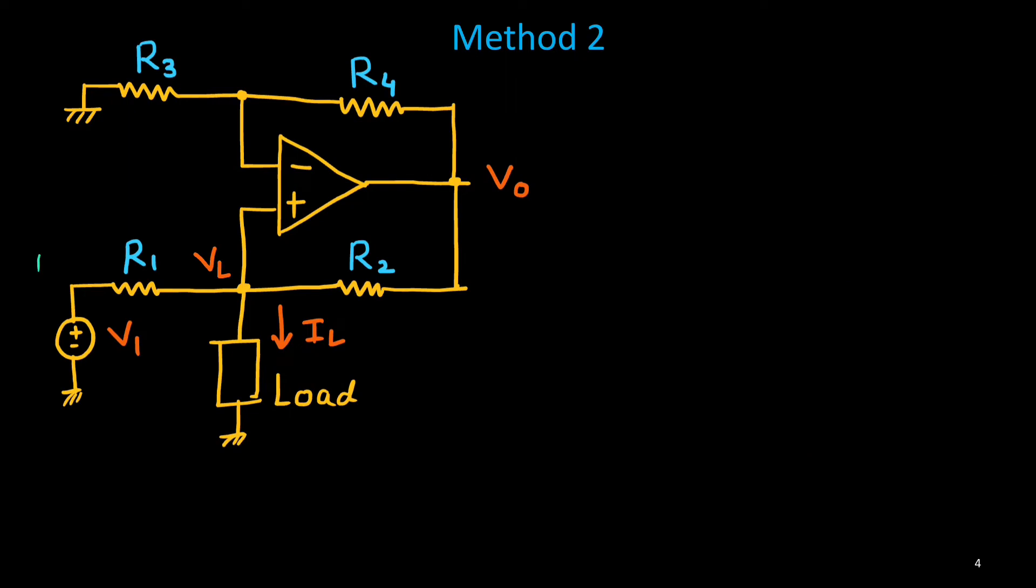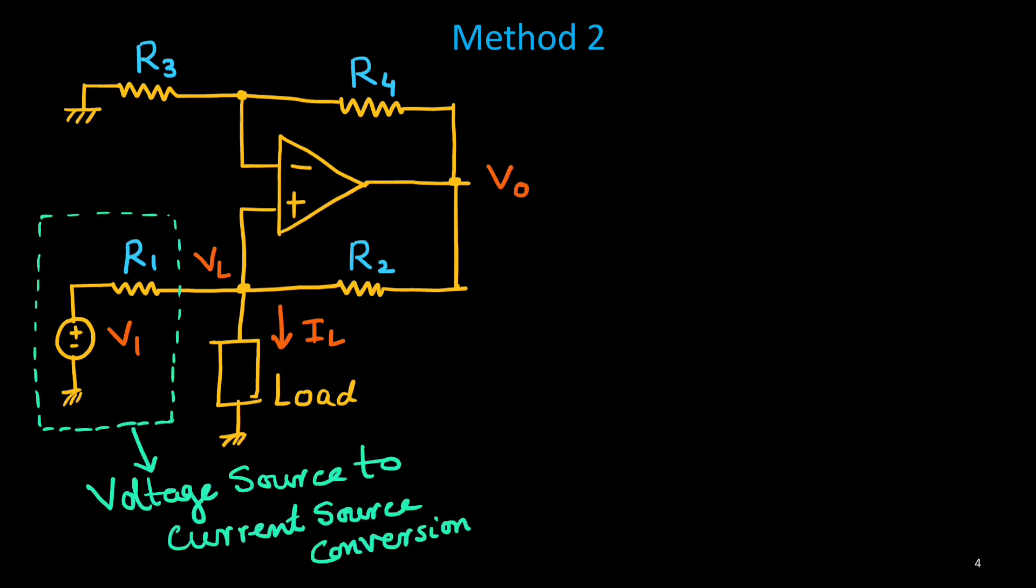Now, look at the circuit. Here, the load resistance is VL. Now, as our objective is to find a current source which is independent of this load. First, what we will do? We will consider this V1 R1, this voltage source and its resistance. We will try to convert it to current source.